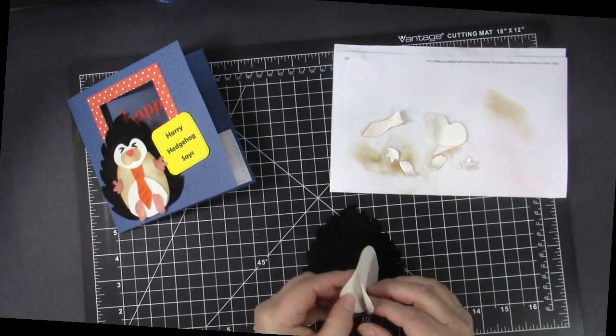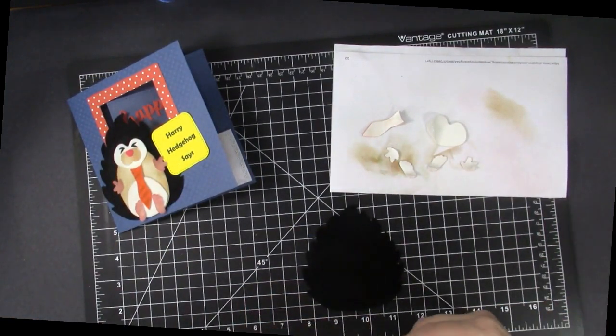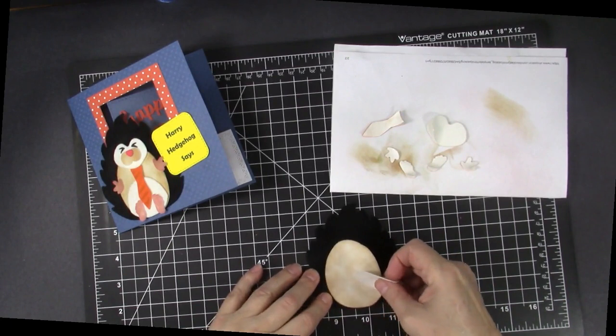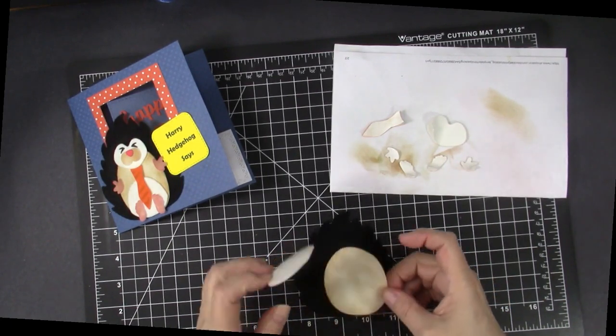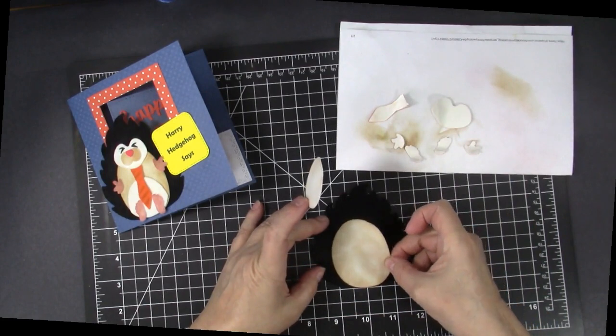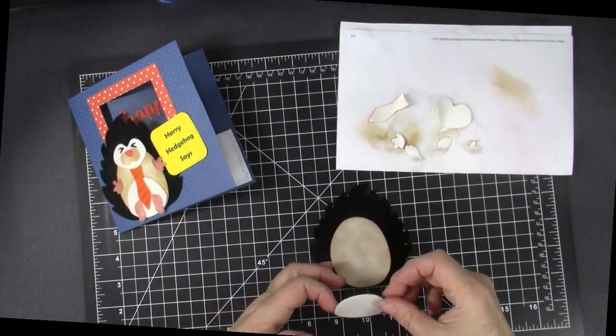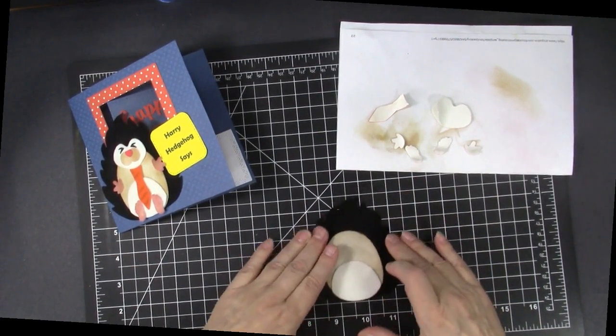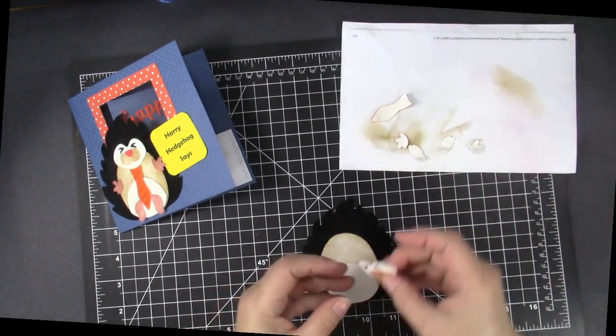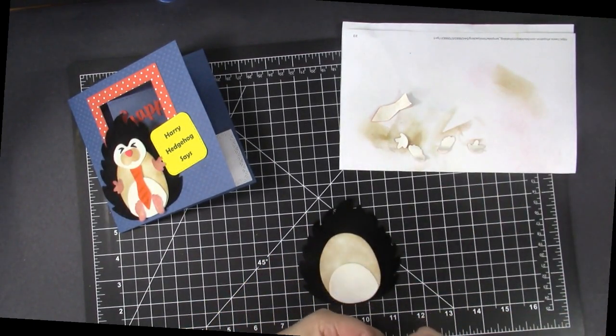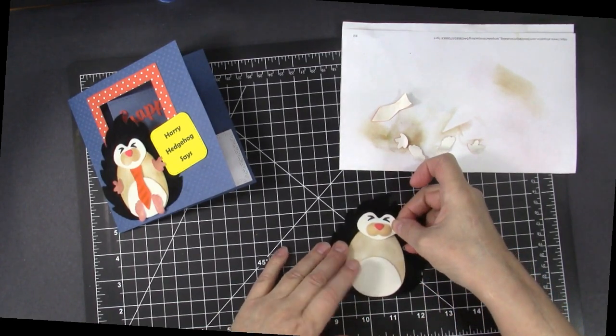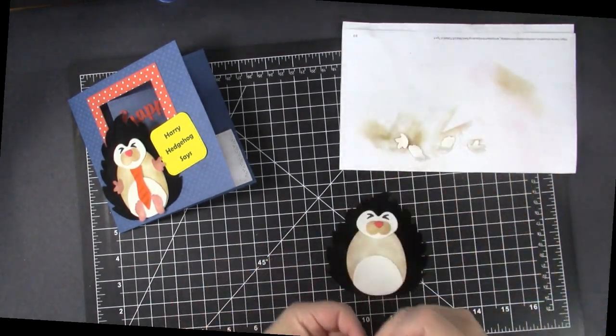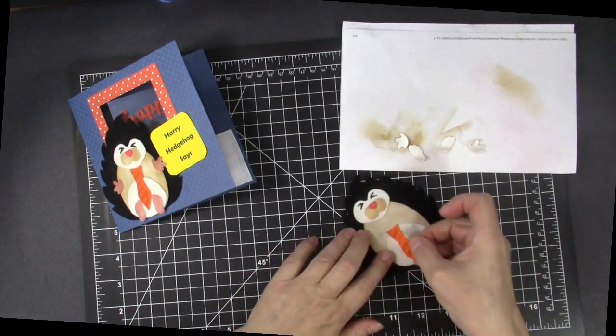So we simply remove the backing. It's very sticky. I'm going to put that on, put the white piece on. I have the face ready to go and that's going to be up here and then the tie is under the chin of course.